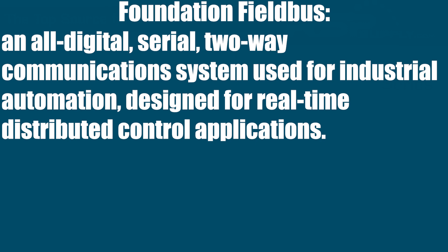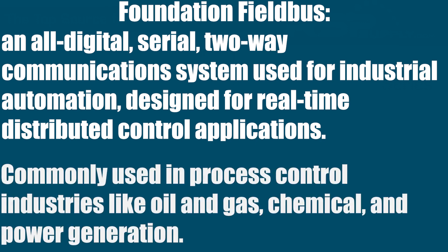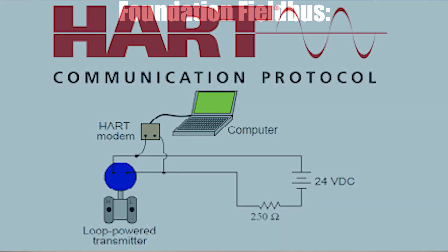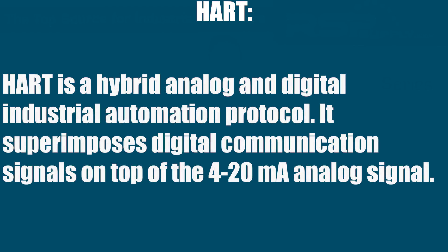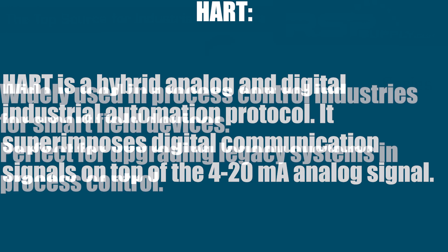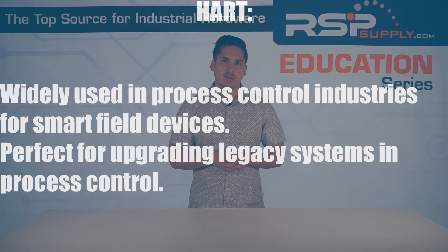Foundation Fieldbus is an all-digital, serial, two-way communication system used for industrial automation, designed for real-time distributed control applications. It's often used in process control industries like oil and gas, chemical, and power generation. You also have HART — Highway Addressable Remote Transducer — a hybrid analog and digital industrial automation protocol. It superimposes digital communication signals on top of the 4-20 milliamp analog signal, and is very often used in process control industries for smart field devices. It's perfect for upgrading legacy systems and process control.